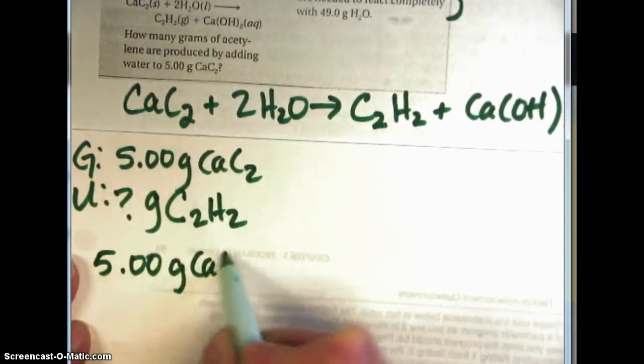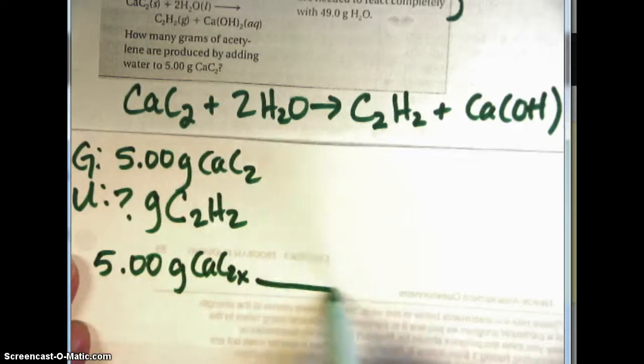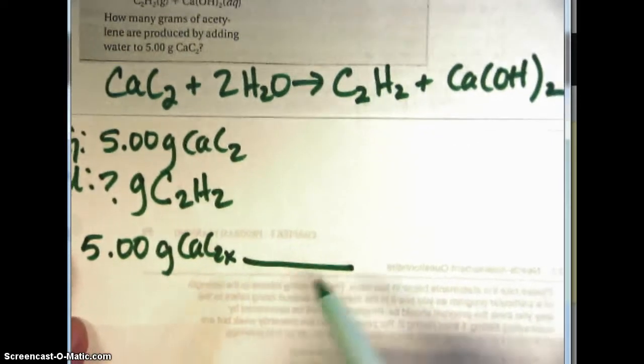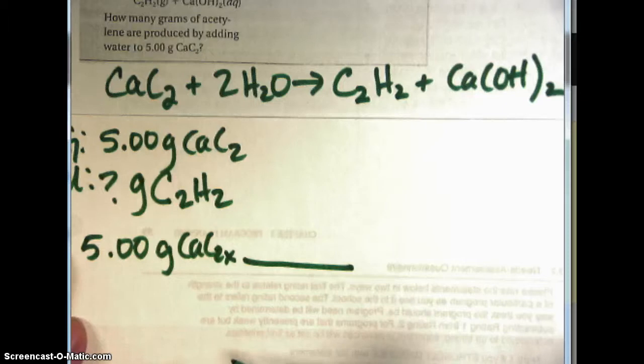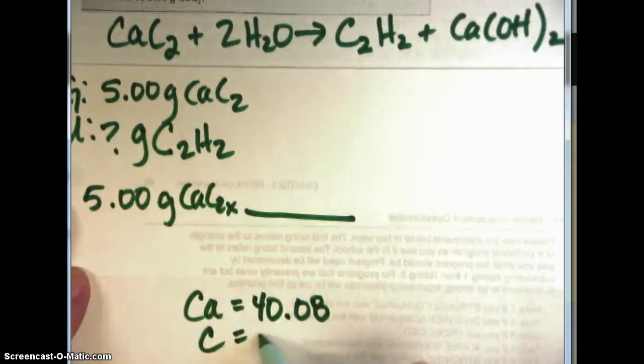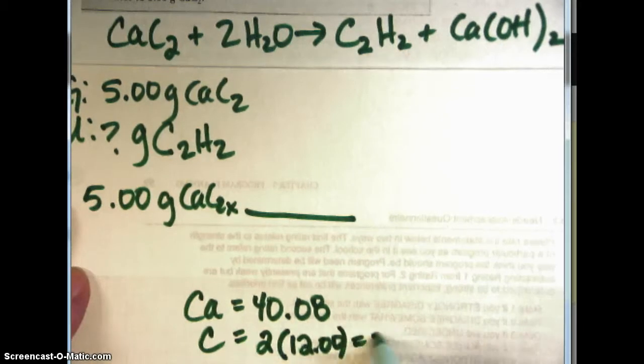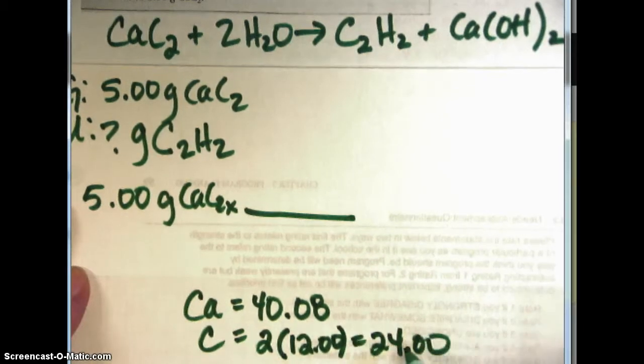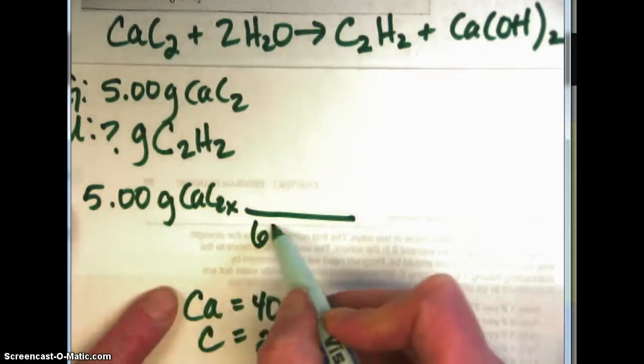Grams of calcium carbide and the molar mass of calcium carbide will have to be used looking at the periodic table. If you look at the periodic table you find that calcium is 40.08 grams per mole and then carbon there are two of those times 12, 24 and if you add those together it is 64.08.